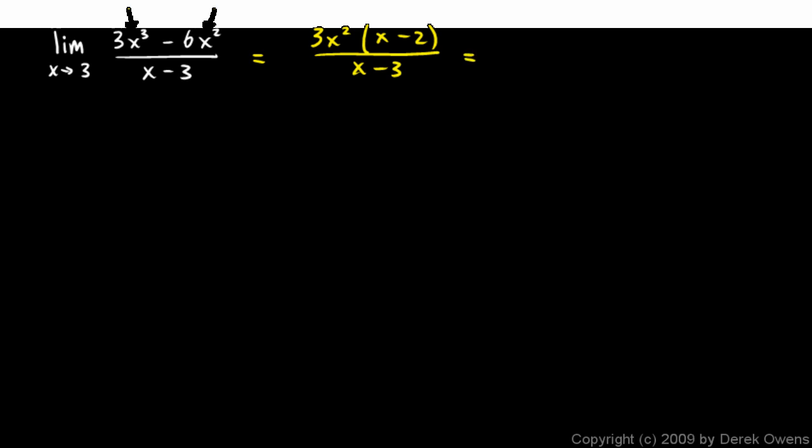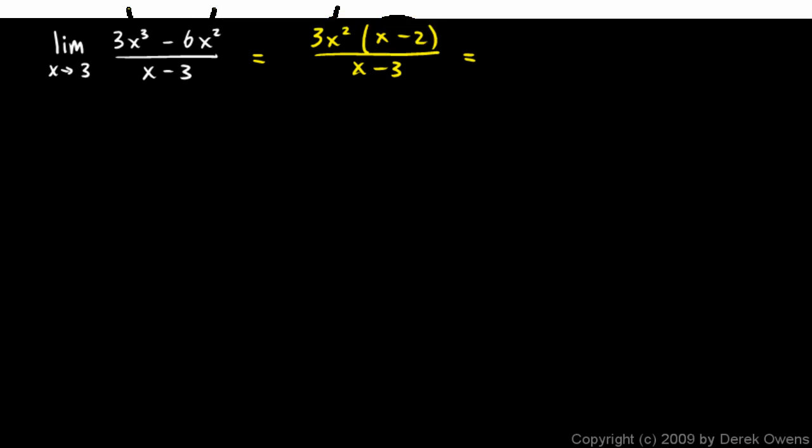We can see that plugging in a 3 right there is going to be 3 times 9, which is 27, times 3 minus 2, which will be 1. So we have 27 over, and then down here, we have a 0. 3 minus 3 is 0. So in this case, the limit does not exist. If we have a 0 denominator and a non-zero numerator, that's different from having 0 over 0 where we could have a limit that exists. Here the limit does not exist. This is a place where the graph has a vertical asymptote.